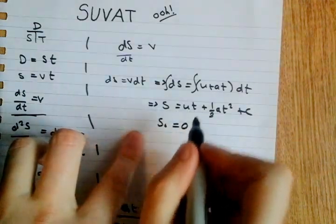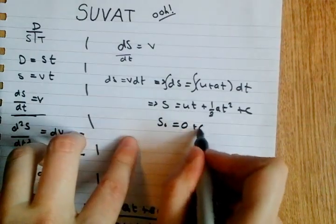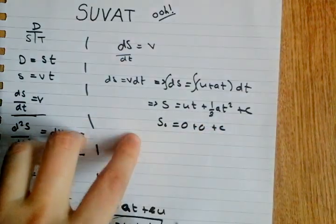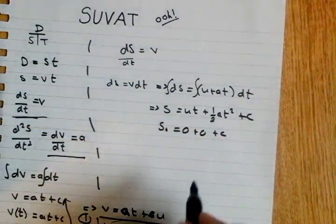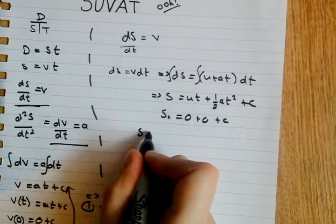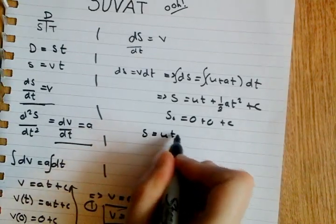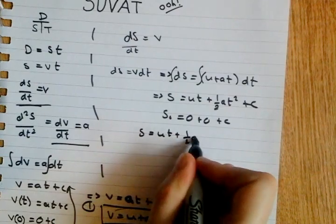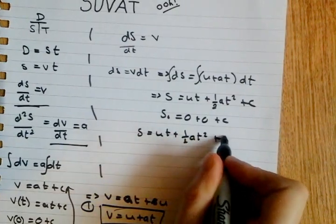Because time is zero, time is zero, plus zero, plus C. So, S naught equals C. So, putting it back into the equation above, we get S equals UT plus half AT² plus S naught.